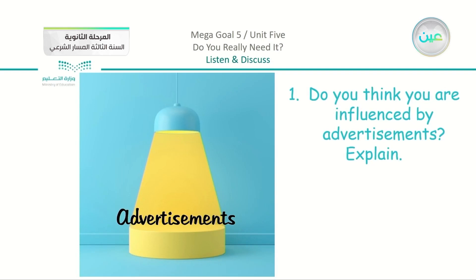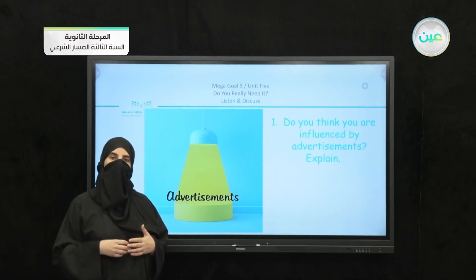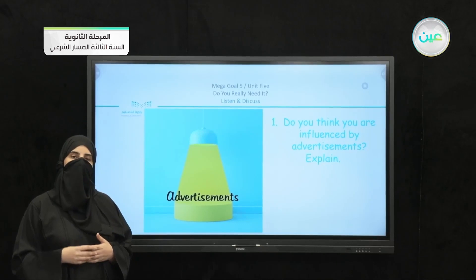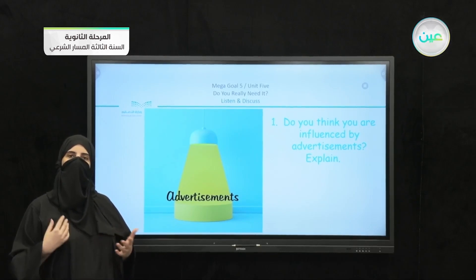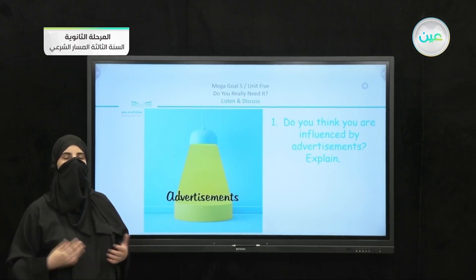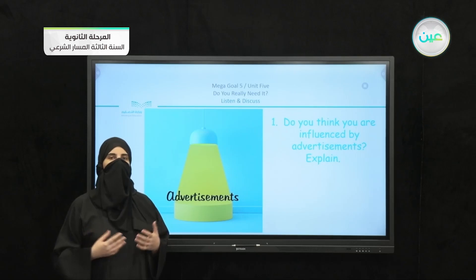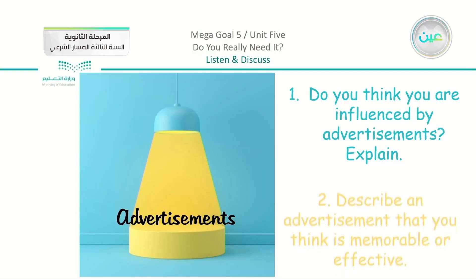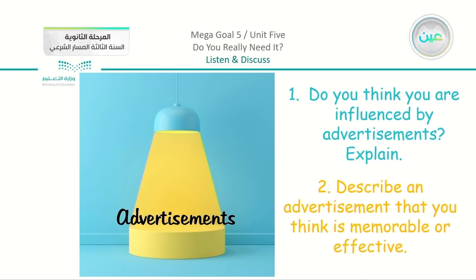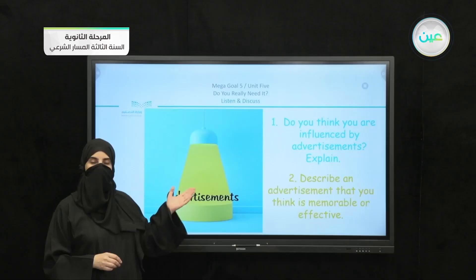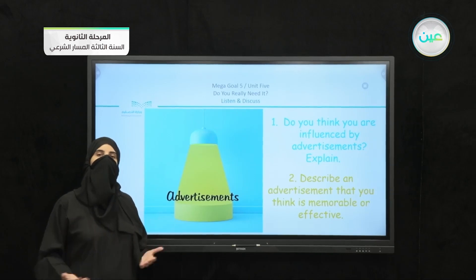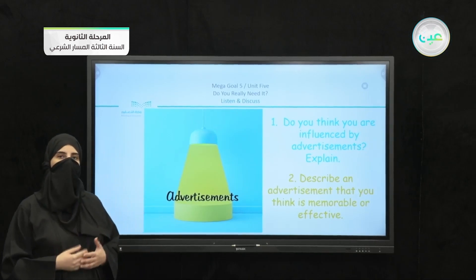Now we have the first discussion question: Do you think you are influenced by advertisements? Explain. Some advertisements are unique and you are attracted to them, which means sometimes you do get influenced by them. If you remember some advertisements, try to discuss with a classmate or friend: what type of advertisement do you remember and why do you think it is so special? Number two: describe an advertisement that you think is memorable or effective — what was so special about it and why was it memorable?